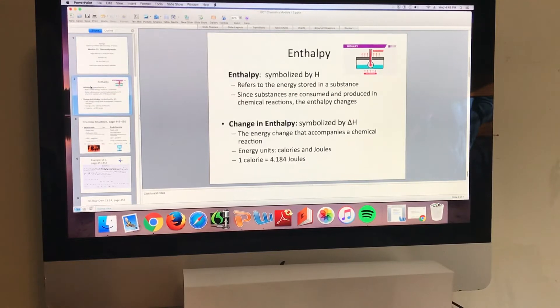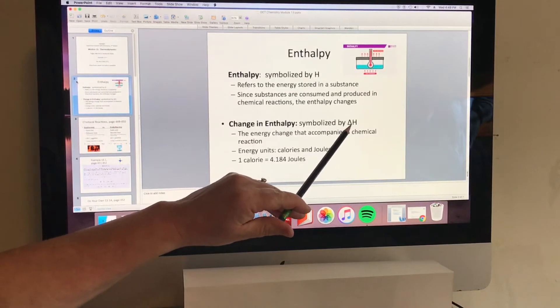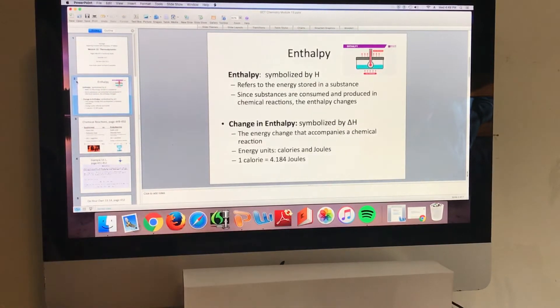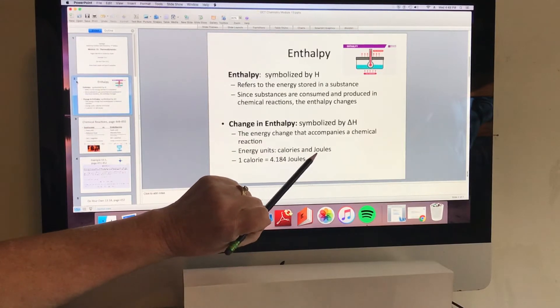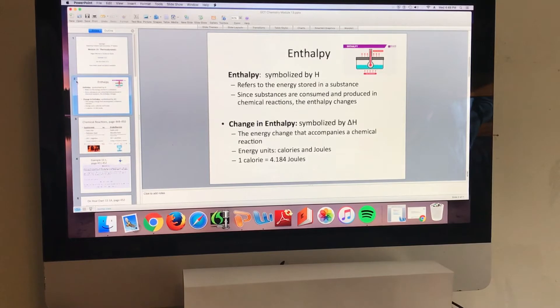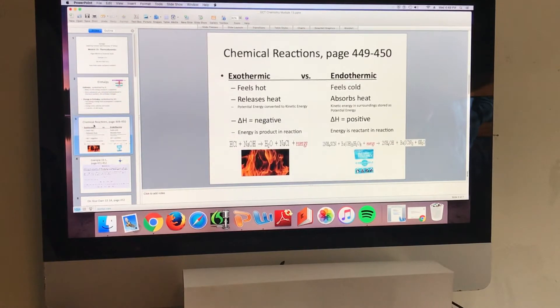In this chapter we're looking at the concept of enthalpy which is symbolized by a capital H. It refers to the energy stored in a substance and the book points out that since during chemical reactions substances are consumed and produced, the enthalpy can change in a reaction and that change is symbolized by the delta H or this triangle which represents delta H. This change in energy can be expressed in calories and or joules and we know one chemistry calorie equals 4.184 joules.